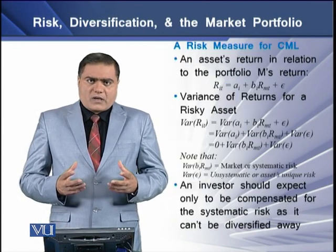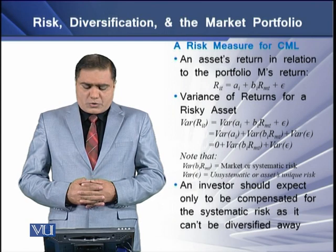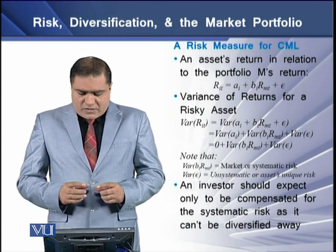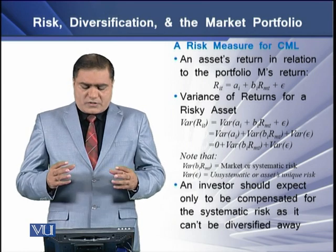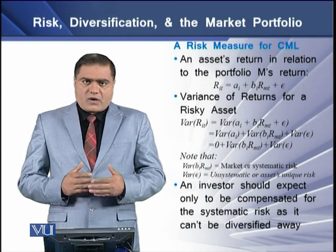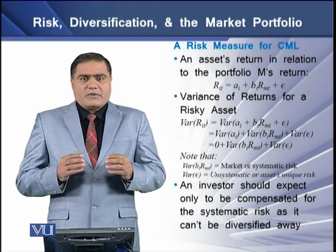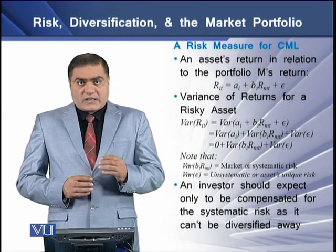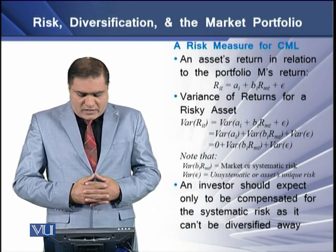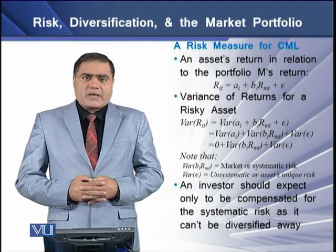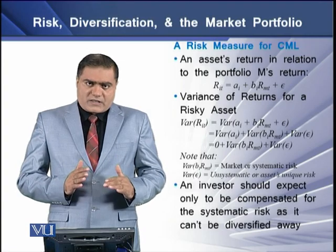Regarding the risk measure of the CML, an asset's return has a linear relationship with the market portfolio's return. The variance of return for a risky asset can be measured in terms of the beta of the individual asset. The individual asset's riskiness is linked linearly with the riskiness of the market portfolio's return, which means any investor should only expect to be compensated for systematic risk, since it cannot be diversified away.